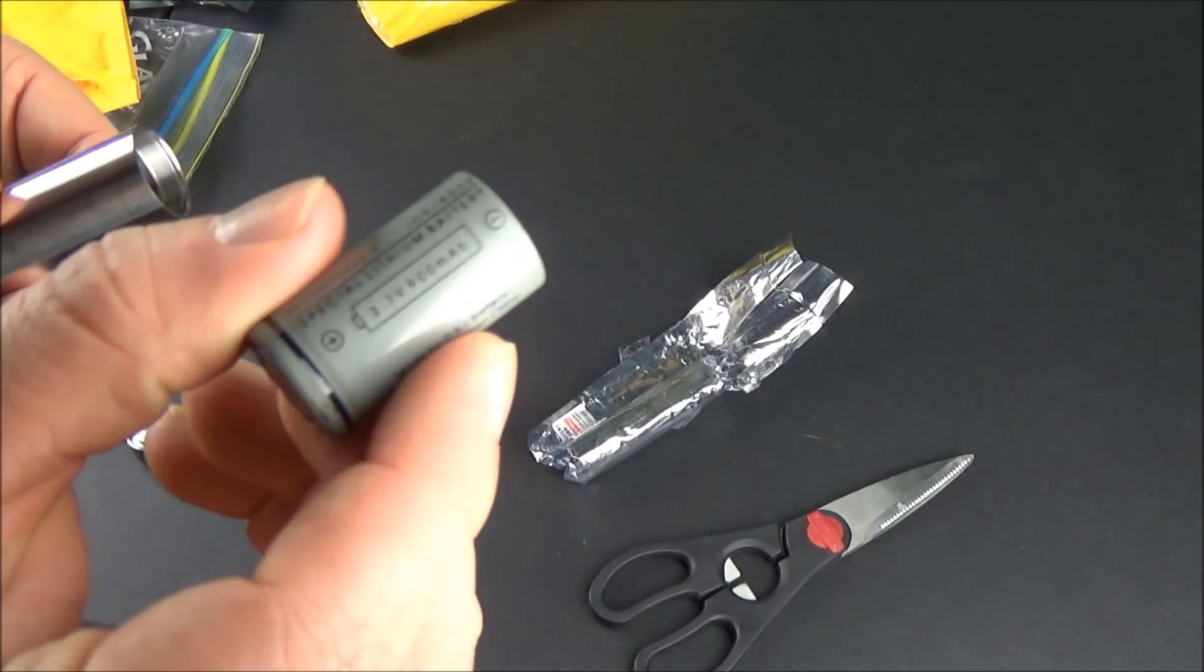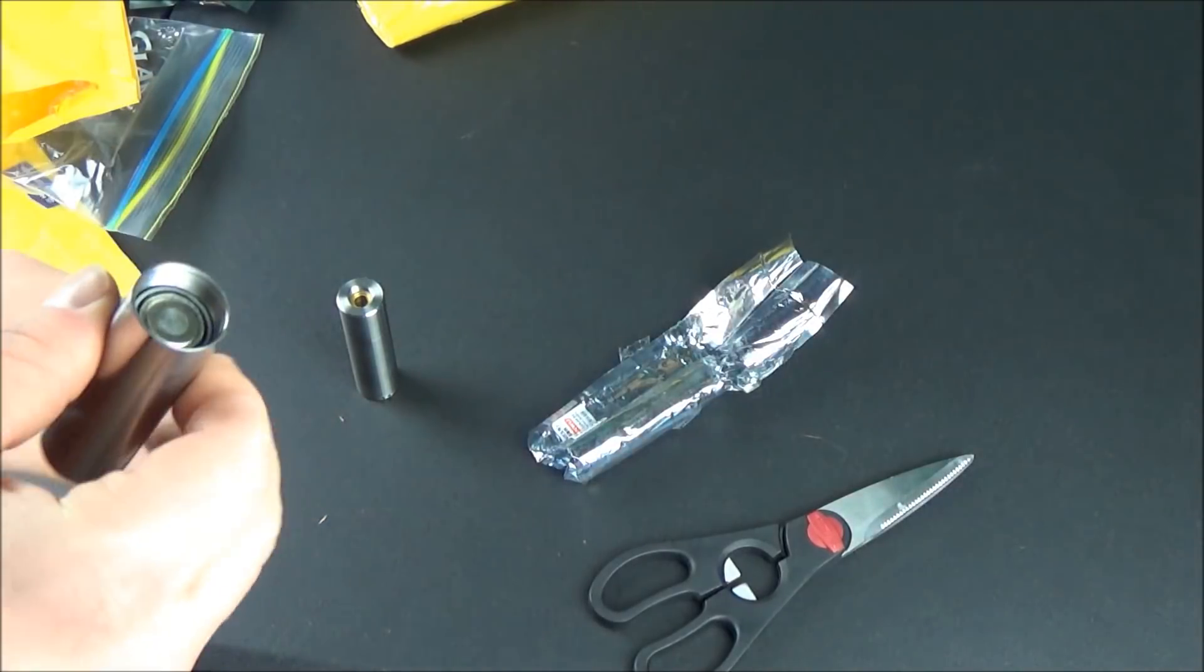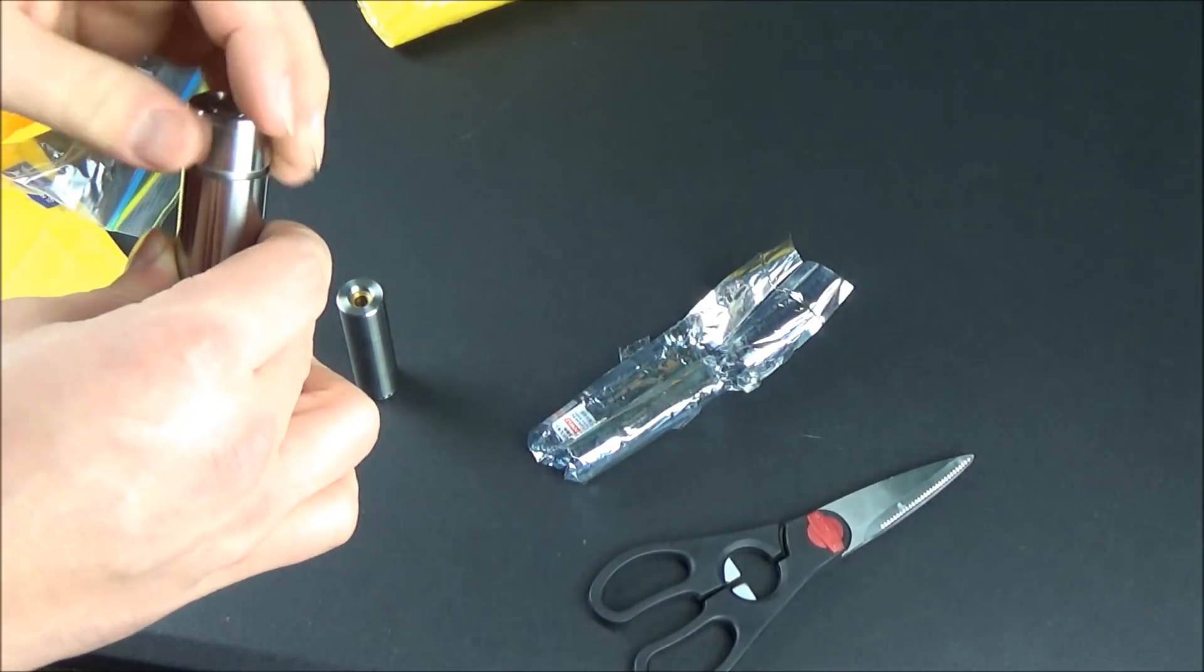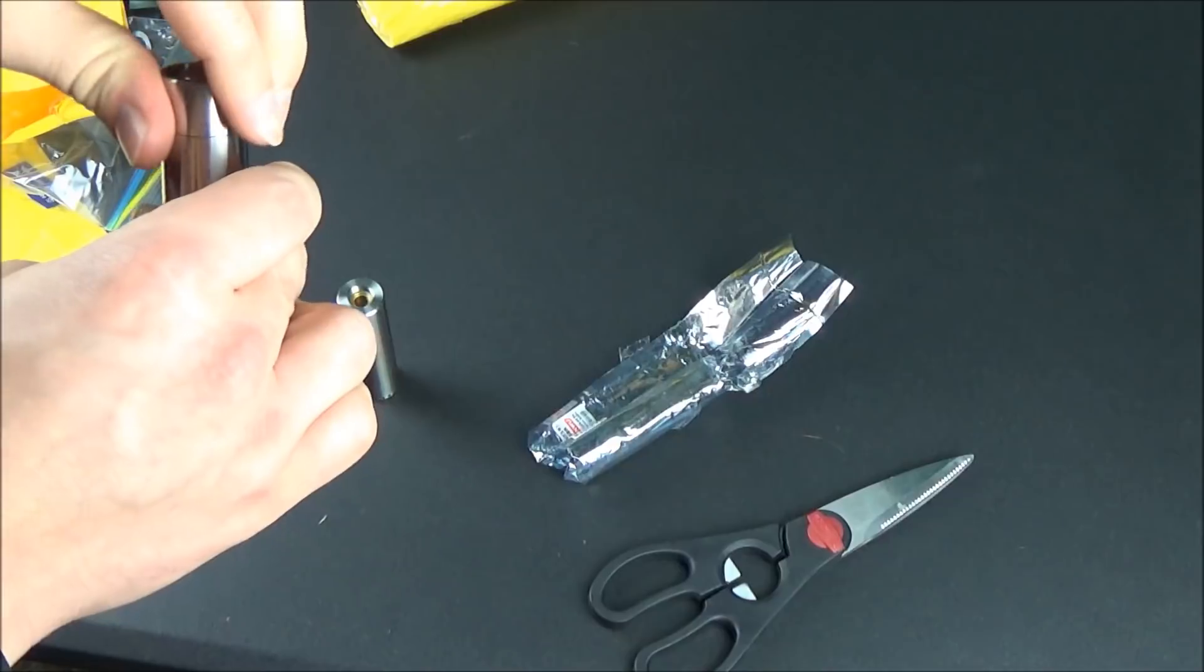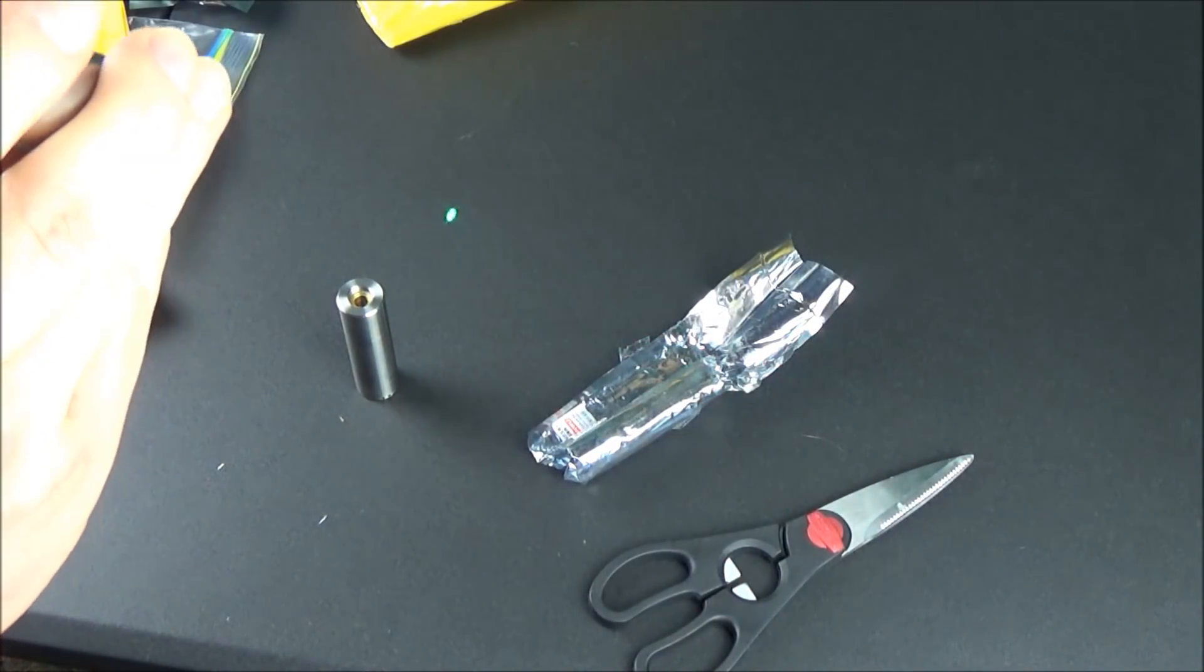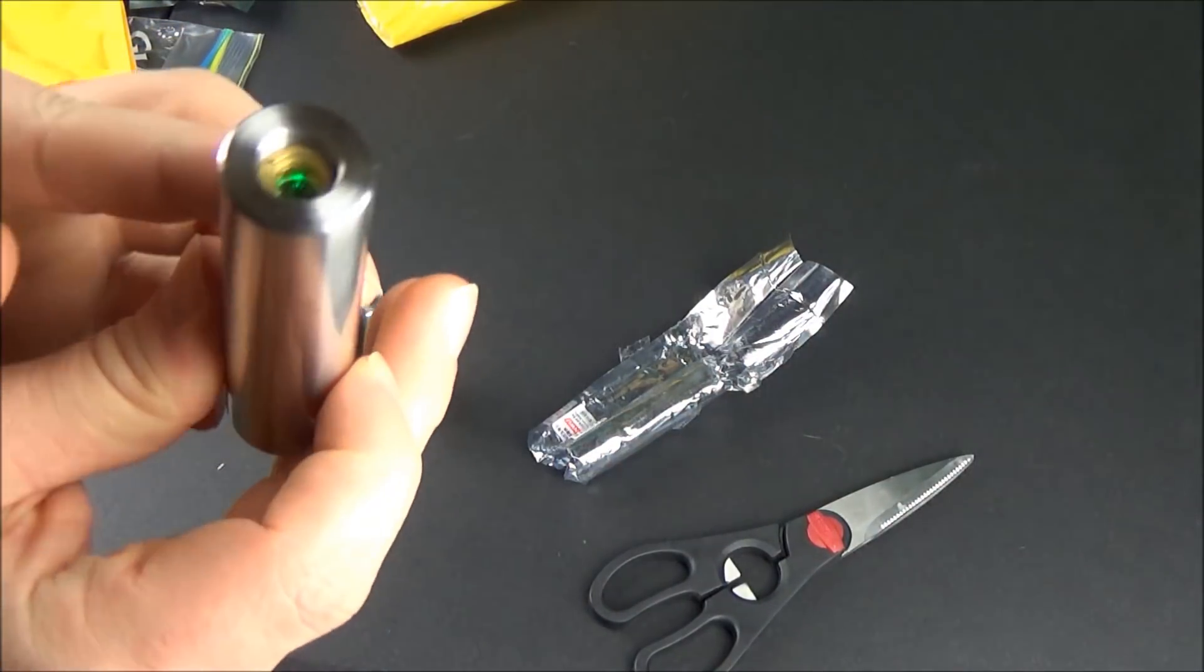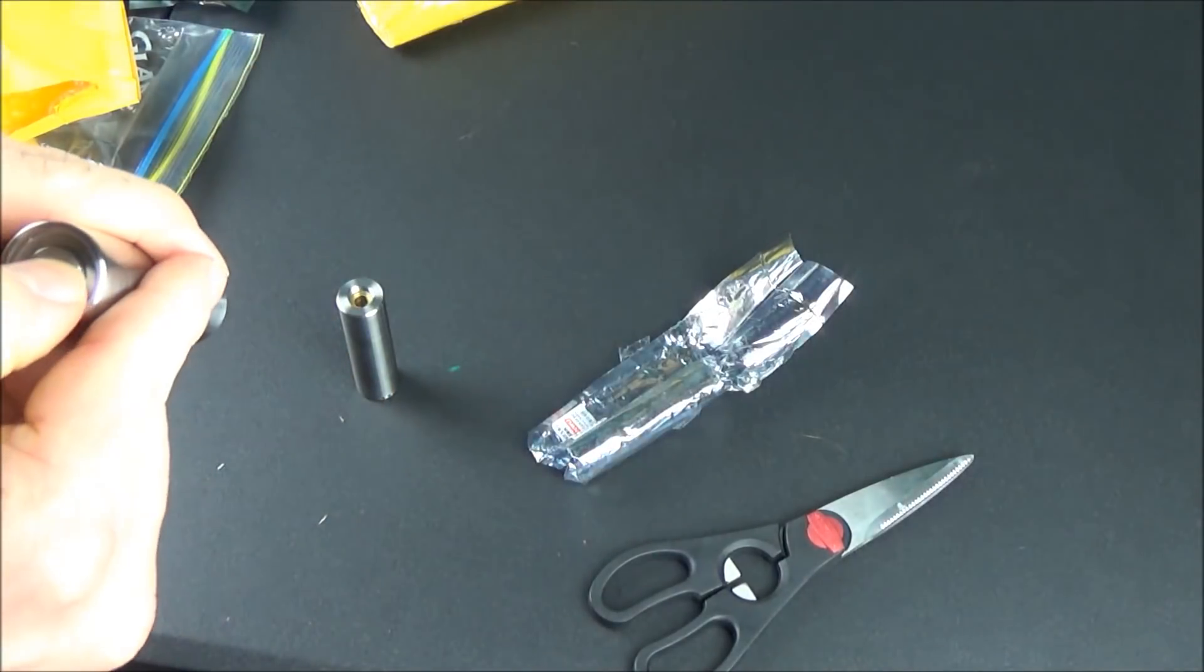You insert that 18350 battery with the positive end facing the diode and the negative end facing the button. If you don't decide to get the batteries from Sanwu directly, just make sure that you're getting flat top ones, otherwise they won't properly fit inside this host. Once you screw it back together it should turn on. We are getting a little power on this one. It seems kind of dim - the batteries probably don't have a lot of juice on them from shipping.